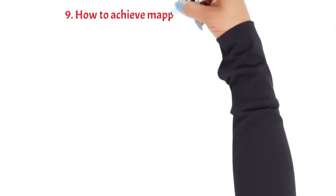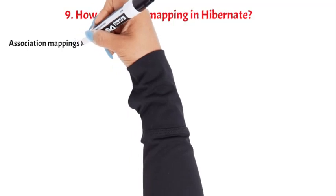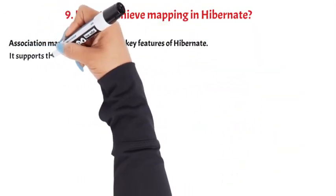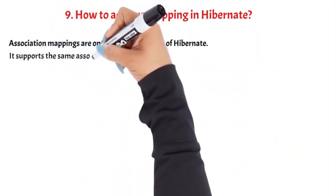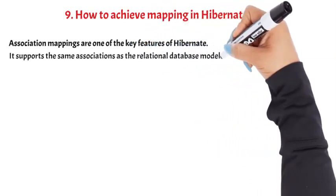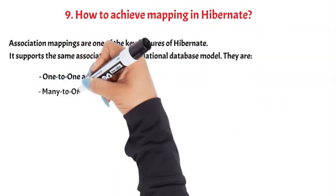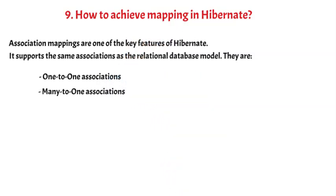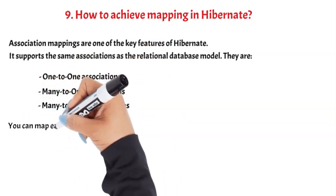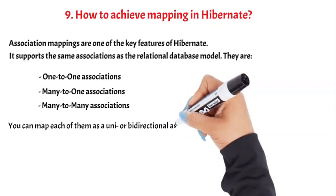Question 9: How to achieve mapping in Hibernate? Association mappings are one of the key features of Hibernate. It supports the same associations as the relational database model. They are 1-to-1 associations, many-to-1 associations, and many-to-many associations. You can map each of them as a unidirectional or bidirectional association.